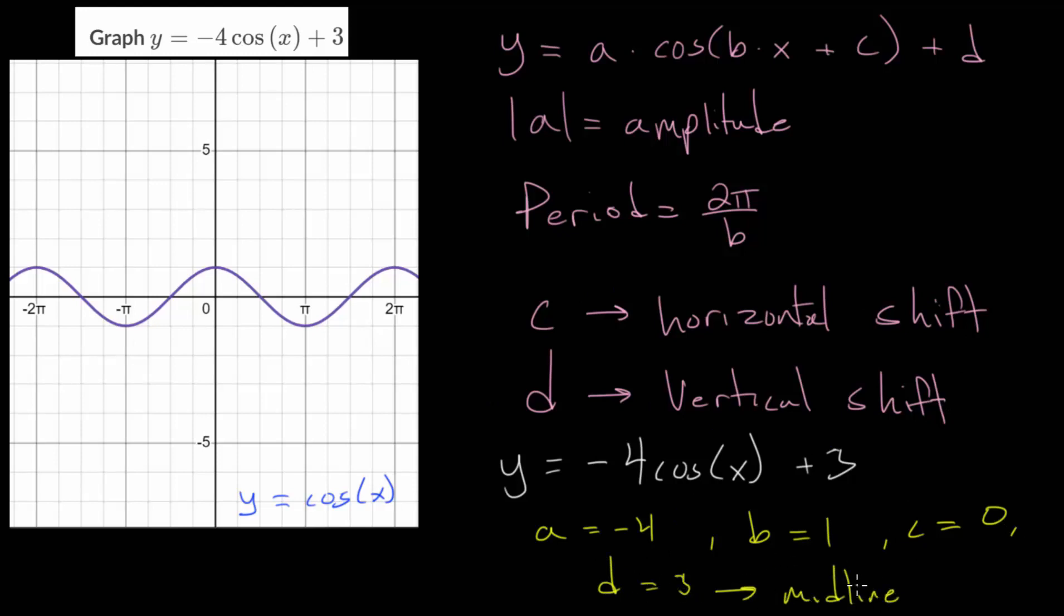For graphing these, it might be helpful to start by graphing the new midline. We know that the parent function has a midline at y equals 0. But we will essentially be shifting all of the y values up 3 units. So let's find a y value of 3. I will draw a horizontal line here just to remind us that this is the midline. This is y equals 3.